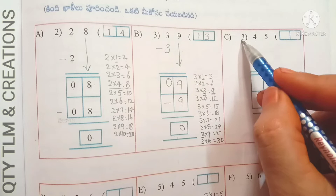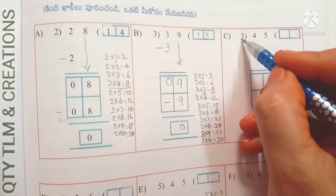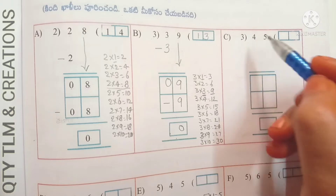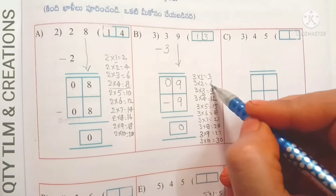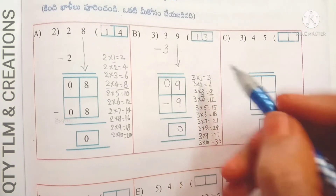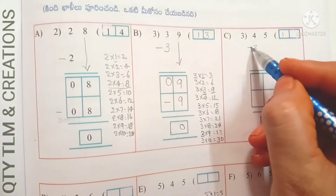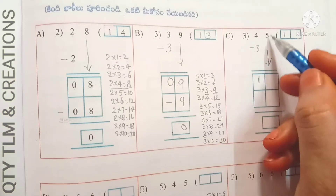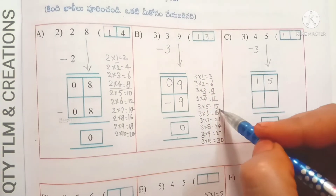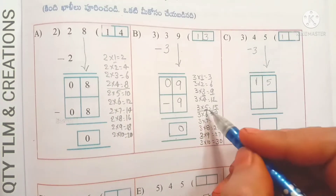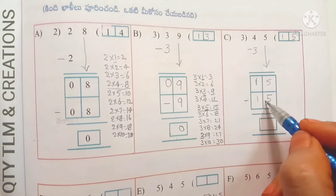Next: 45 divided by 3. Division starts from the highest place value, which is 4. Observe the 3 times table — 3 twos are 6 and 3 ones are 3. Since 6 is bigger than 4, we take only 3 ones are 3. Write 1 in the quotient's place and 3 under 4, subtract: we get 1. Bring down 5; it becomes 15. 3 fives are 15, so write 5 in the ones place. Write 15 under 15 and subtract: we get 0.